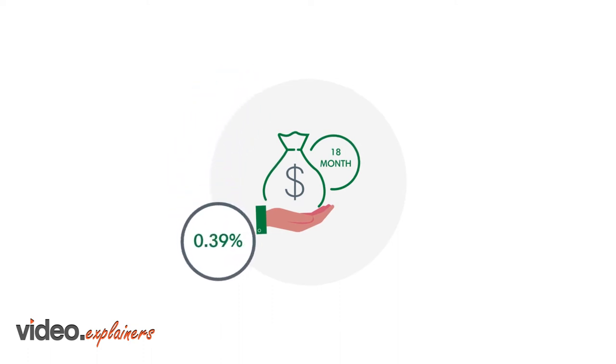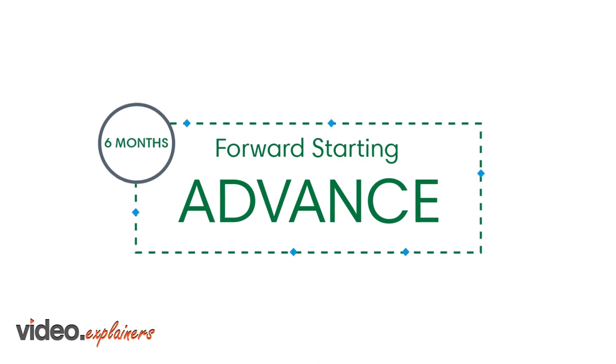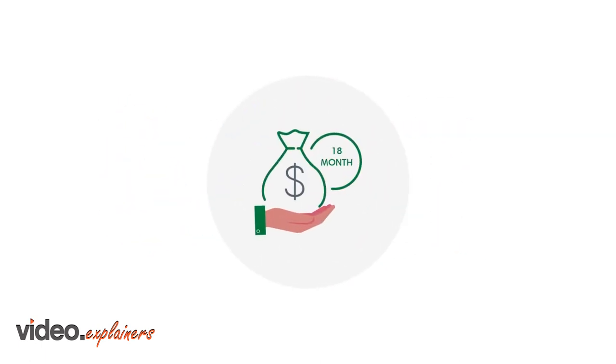Instead of choosing an 18-month classic advance at 0.39% or a 24-month classic advance at 0.51%, you elect to use a Forward Starting Advance with a funding delay of 6 months and an 18-month maturity priced at 0.42%.